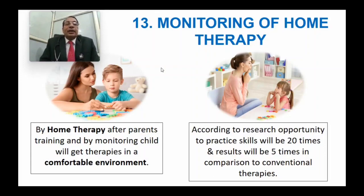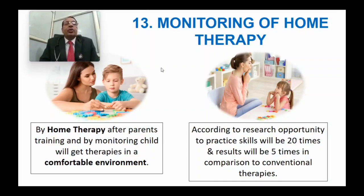These are the points you should check in the treatment of your autistic child. If you are not implementing all these points, your child will not progress quickly. Check what points are missing and implement them for better results. I am 100% sure this video has given you the answer as to why your child is not getting improvement. If this video is helpful, please share it with other parents, like it, and subscribe the channel. Thank you for watching.